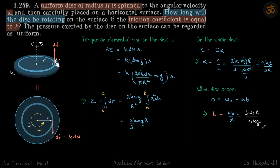So this is the side view of the ring. This will be the normal reaction dN on this elemental ring. If you see from the top, the frictional force dF on that ring alone will be k dN, and dN is due to the mass of this ring alone.